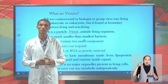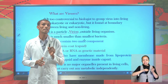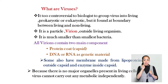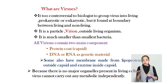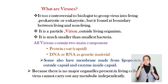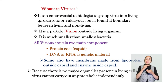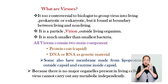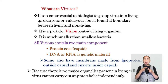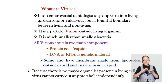The key thing that distinguishes virus from eukaryotic organisms is the presence of genetic material. Viral genetic material is not both DNA and RNA — virus contains either RNA or DNA, but not both. Some viruses may contain a membrane outside the protein coat, and some may secrete enzymes inside the protein coat.